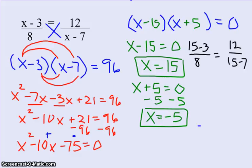And 15 minus 7 is also 8. So we ended up with 12 over 8 equals 12 over 8. We just confirmed that x equals 15 works as an answer.